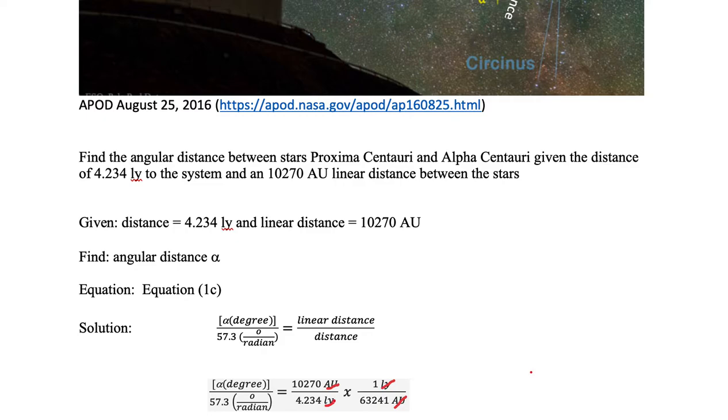Now all the letters have canceled so now we're able to multiply. We can take 10270 multiply it by 1, divide it by 4.234 and then divide all of that by 63241. So let's go to the Google calculator and start this calculation.